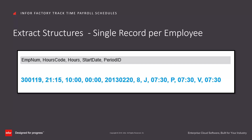This is an example of a single record per employee structure. The extract configuration calls for employee number, regular clocked hours, overtime clocked hours, double-time clocked hours, period start date, and pay period ID. These data points display for all employee extract records. For employees that incurred alternate hours during the period, those hours along with their associated code will display at the end of the record in alphabetical order of the alternate hours code. In this example, employee 30119 worked 21 hours 15 minutes standard, 10 hours overtime, 0 hours double-time, with a pay period start of 2013-02-20, pay period ID 8, and 7 hours 30 each against three different alternate codes.